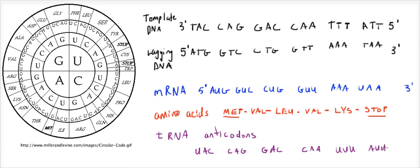And that's the complete rundown of transcribing and translating a section of template DNA. Some things to think about: the genetic code is redundant. You can see that we got valine two different ways — GUC and GUU. No matter what that third base is, if you start with G then U, it's going to be a Val. This has many purposes, but it strengthens the genetic code so that in case of a mutation — a change in that third base — you wouldn't necessarily change which amino acid is put into the sequence.